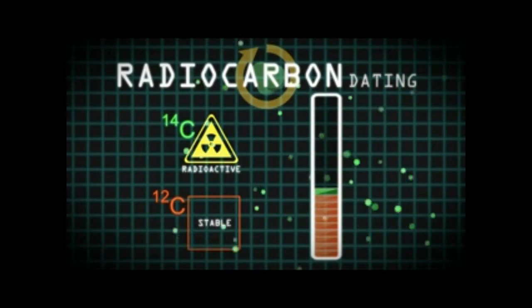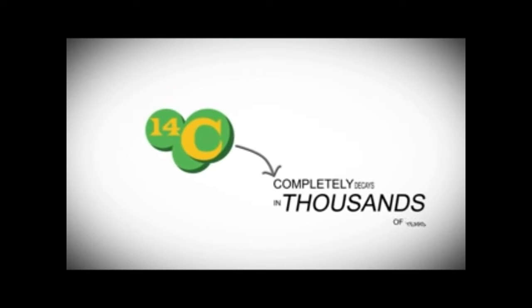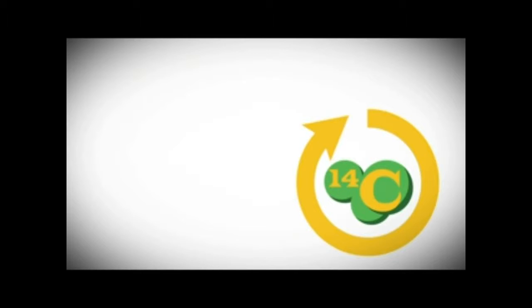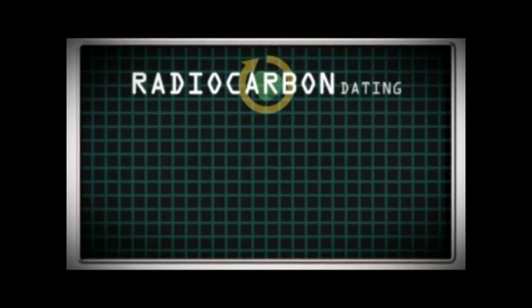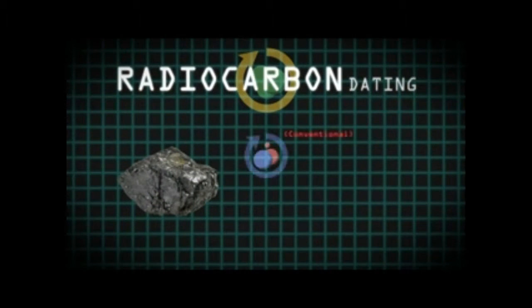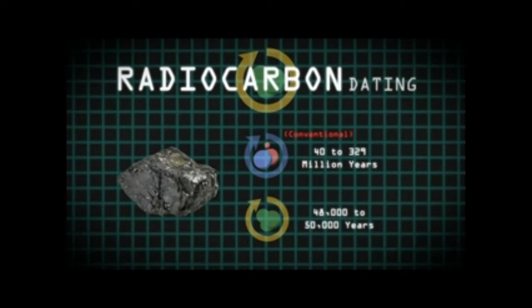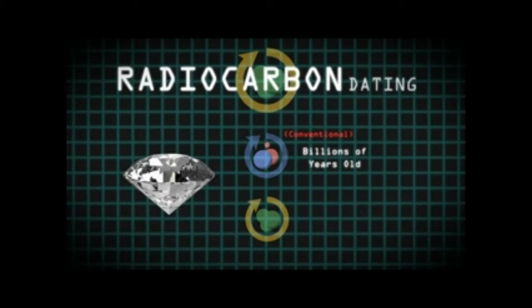Because carbon-14 completely decays in thousands of years, it should only be useful to date objects no more than tens of thousands of years old. However, using this method, scientists determined that samples from US coal beds conventionally dated at 40 to 329 million years had carbon ages of 48,000 to 50,000 years. Diamonds are said to be billions of years old, but they still have carbon-14 in them and returned ages of about 55,000 carbon years.